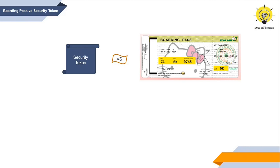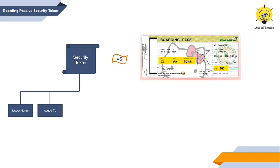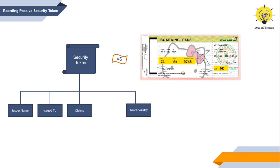Just as a boarding pass contains information like your name, flight name, seat number, and the issuing airline, a security token also contains similar information. It has the name of the issuer — that is the federation identifier name of your ADFS server. It contains the name of the application to whom the token is issued. It has the details of the claims, a timestamp for when the token was issued and until when it is valid, and it includes the token signing certificate used by the ADFS server to sign the token.